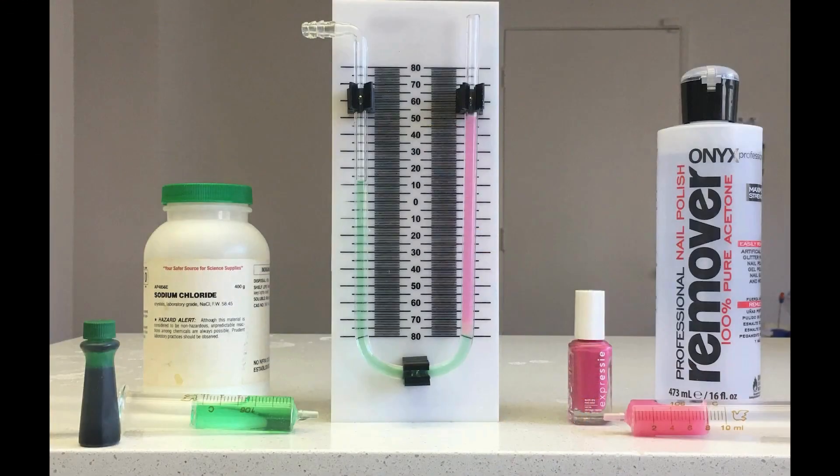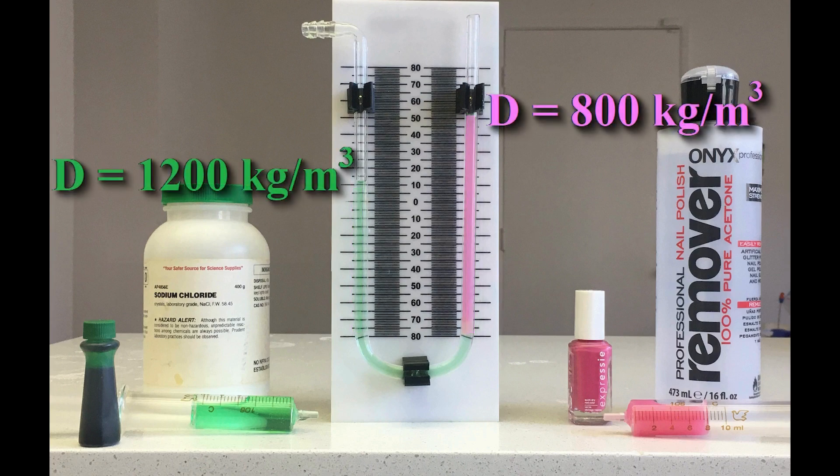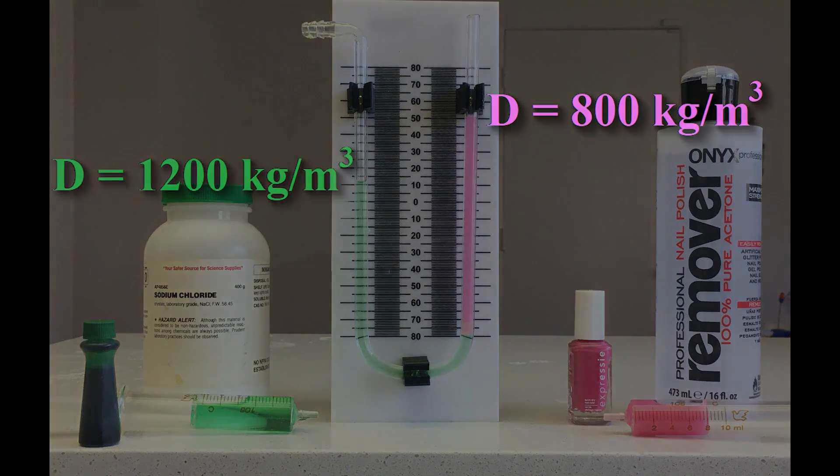My favorite demo with the density manometer is to compare saturated salt water to pure acetone. These two liquids will not mix and are easy to clean. The ratio is quite large, 3 to 2. Thus, acetone has a density of about 0.8 or 800 kilograms per meter cubed.